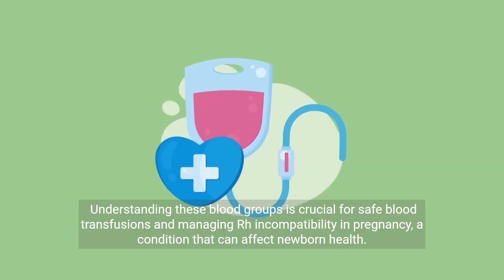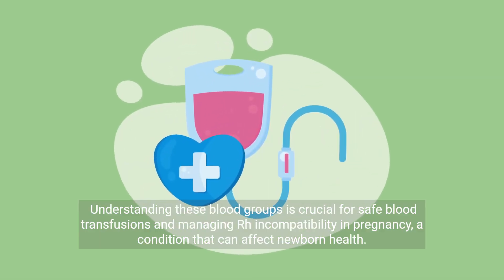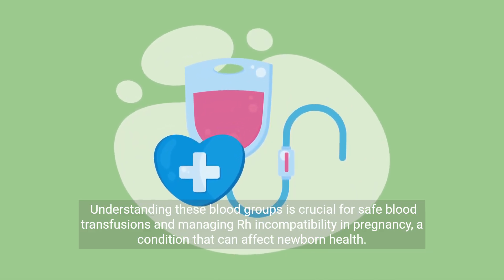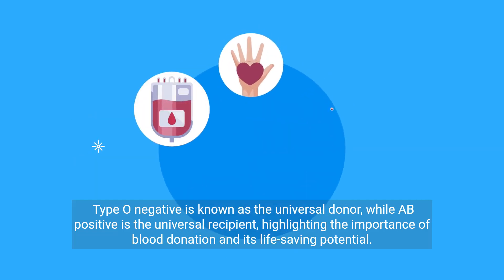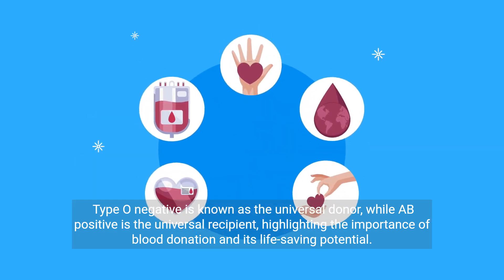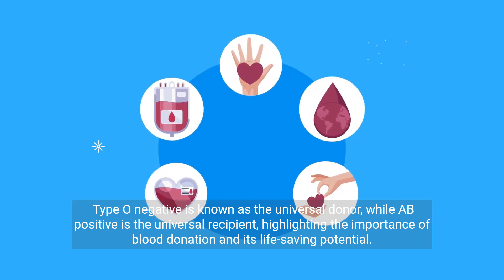Understanding these blood groups is crucial for safe blood transfusions and managing RH incompatibility in pregnancy, a condition that can affect newborn health. Type O negative is known as the universal donor, while AB positive is the universal recipient, highlighting the importance of blood donation and its life-saving potential.